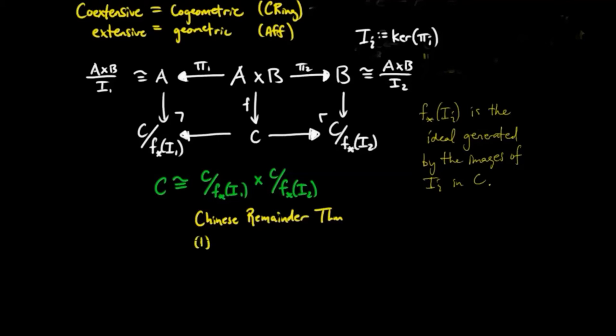Because F lower star I1 is equal to the image of B under F, and F lower star I2 is equal to the image of A under F. And so the sum will give us all of C. It'll include the unit.